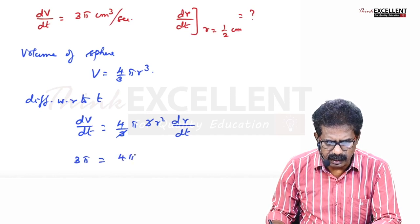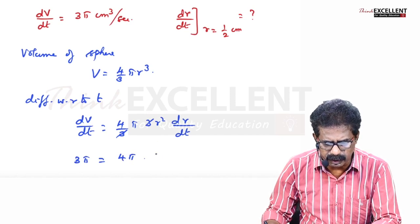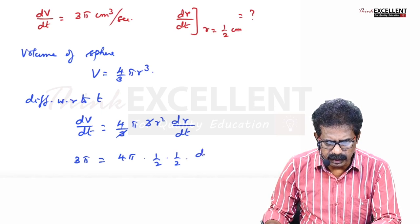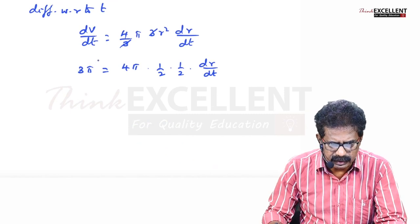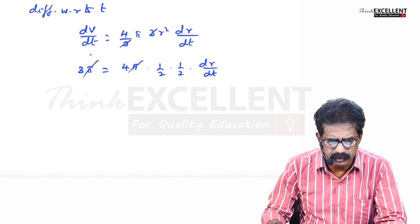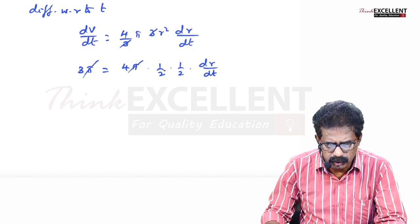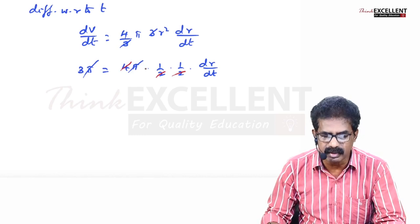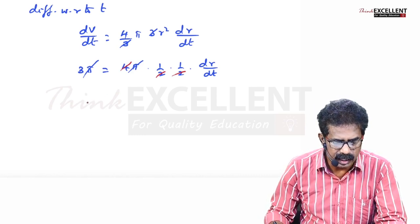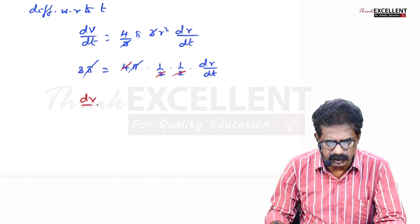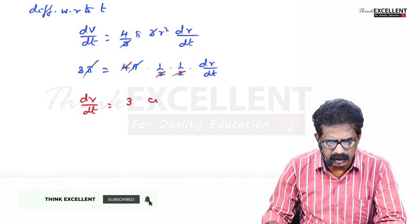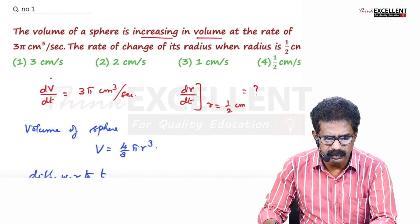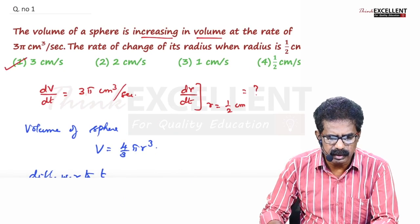Substituting the known values: dv/dt is 3π. On the right side, 3 and 3 cancel, giving 4πr². With r = 1/2: 4π · (1/2) · (1/2) · dr/dt. Cancel π on both sides. 2 × 2 = 4, everything cancels, and dr/dt equals 3 centimeters per second.